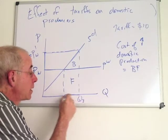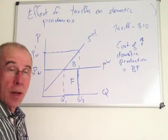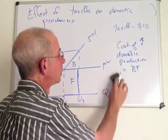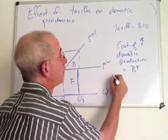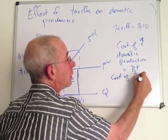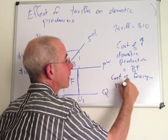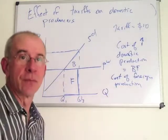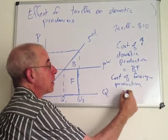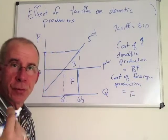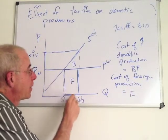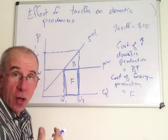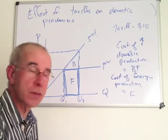So the price, or the cost of foreign production, and certainly the cost of buying it from foreigners is equal to F. F is how much you could have gotten it from foreigners, B plus F is what it costs to get it from the domestic source instead.